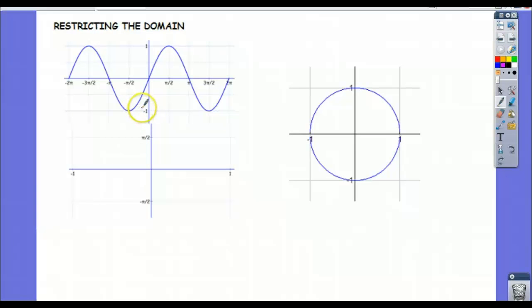Now the reason its inverse is going to fail the vertical line test is because the sine graph fails the horizontal line test, right? So if we want our inverse of the sine graph, the inverse sine function to pass the vertical line test,